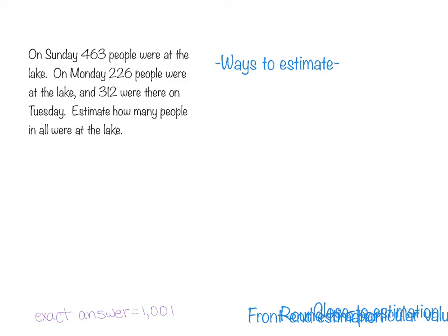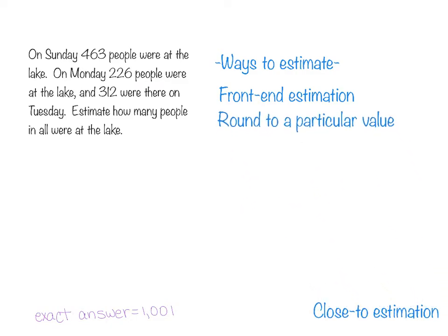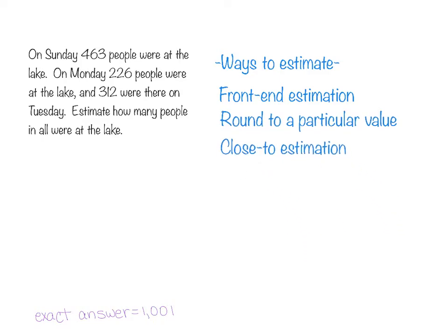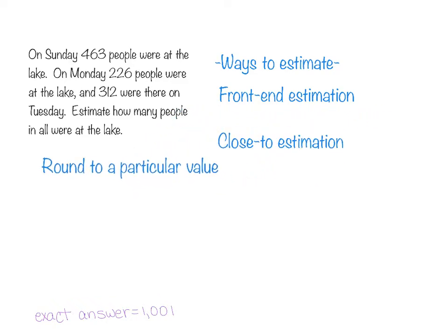We need to think about ways to estimate for this particular problem. And as you will recall, the vocab words that we had: Front End Estimation, Round to a Particular Value, and Close to Estimation. We need to determine which of those methods we would use. We're going to start with rounding to a particular value, and let's say that the particular value you're going to round to is the nearest hundred.